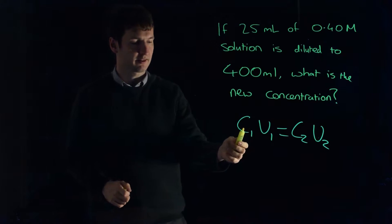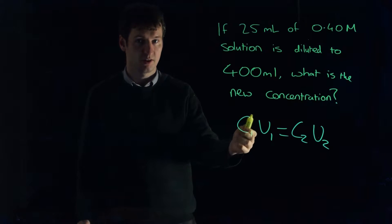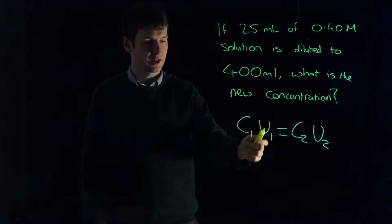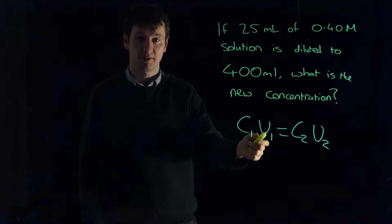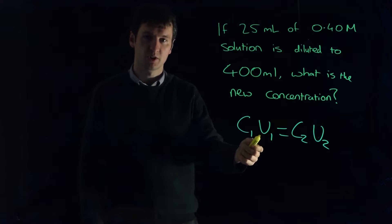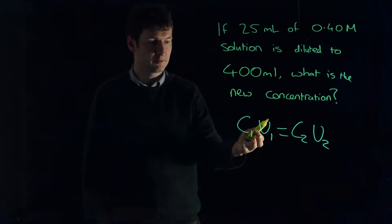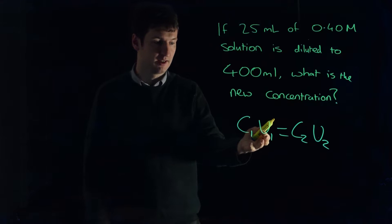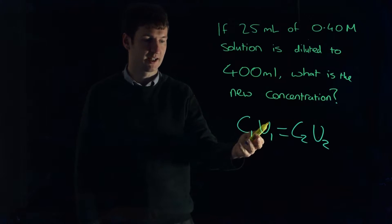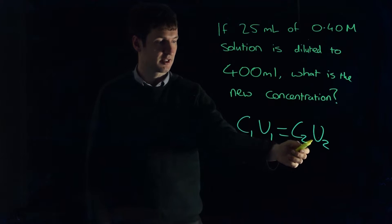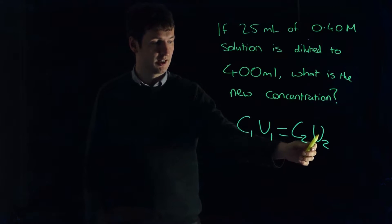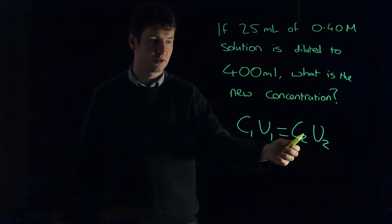If we think about this formula, the concentration of solution 1 multiplied by its volume — concentration by volume, molarity by volume, or grams per litre by litres — any of those will give you an amount. And the amount of material you put in, if you change its volume, you still have to have the same number of moles of material. So this number of moles has to equal that number of moles, which means if we know our new volume, we can work out our new concentration.